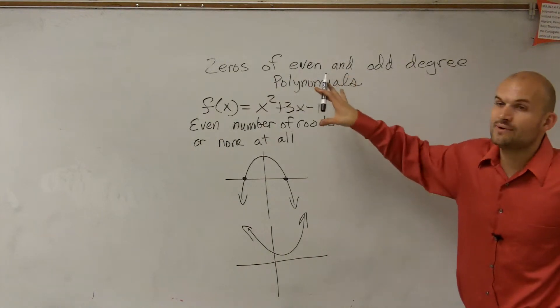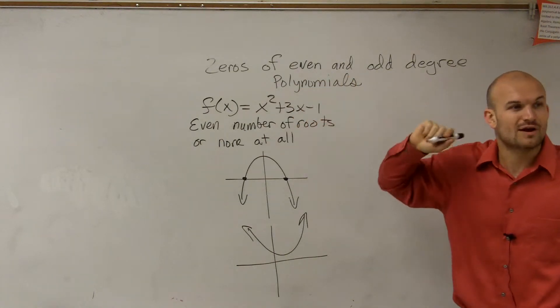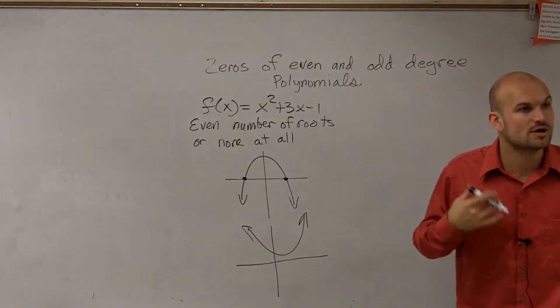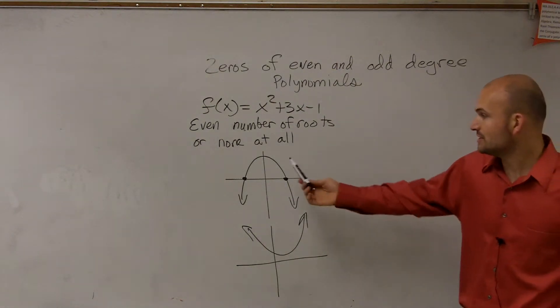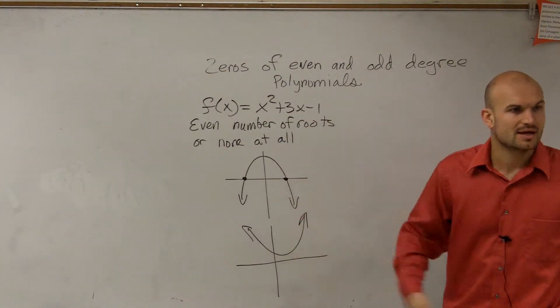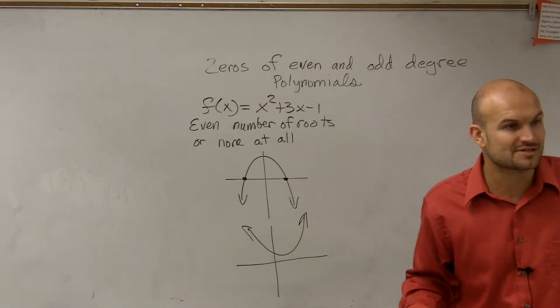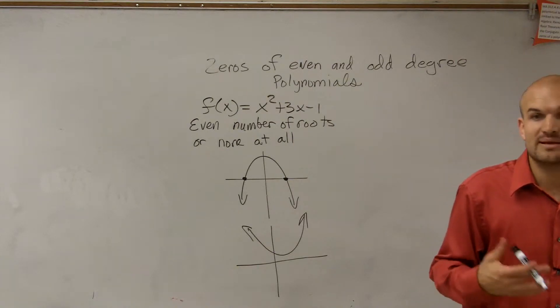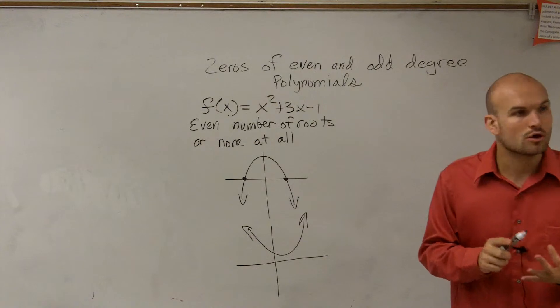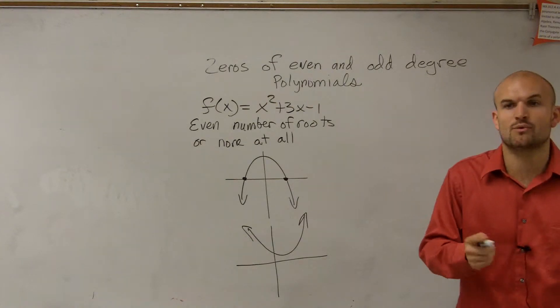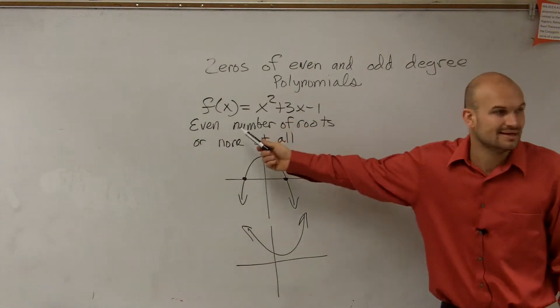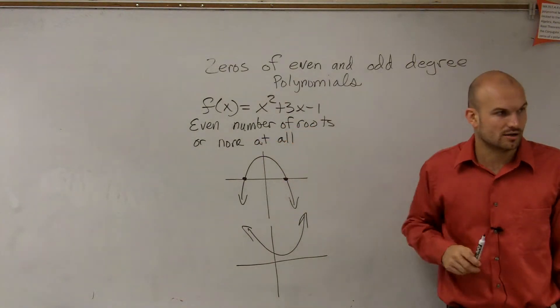So what we're trying to tell you is, when you have zeros, or f of x, for any even number, you're going to have an even number of zeros, or none at all. So in this case, you could see x squared. That produces two solutions. If I have f of x to the fourth, that means the only possible number of solutions I can have is either four, two, or zero. And we're going to learn why it can't be more than four. We'll talk about that later. But you guys need to understand, it has to be an even number, or none at all.